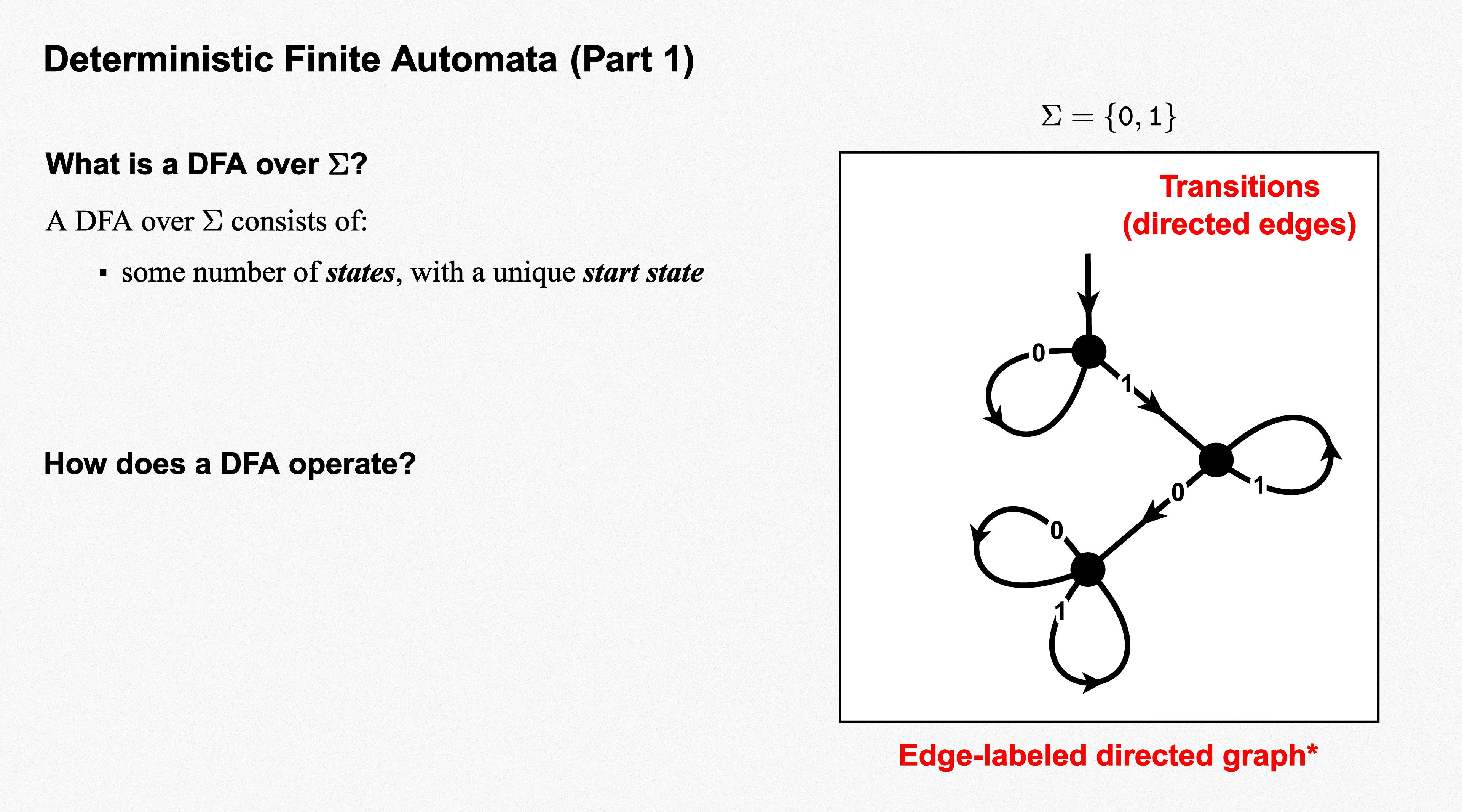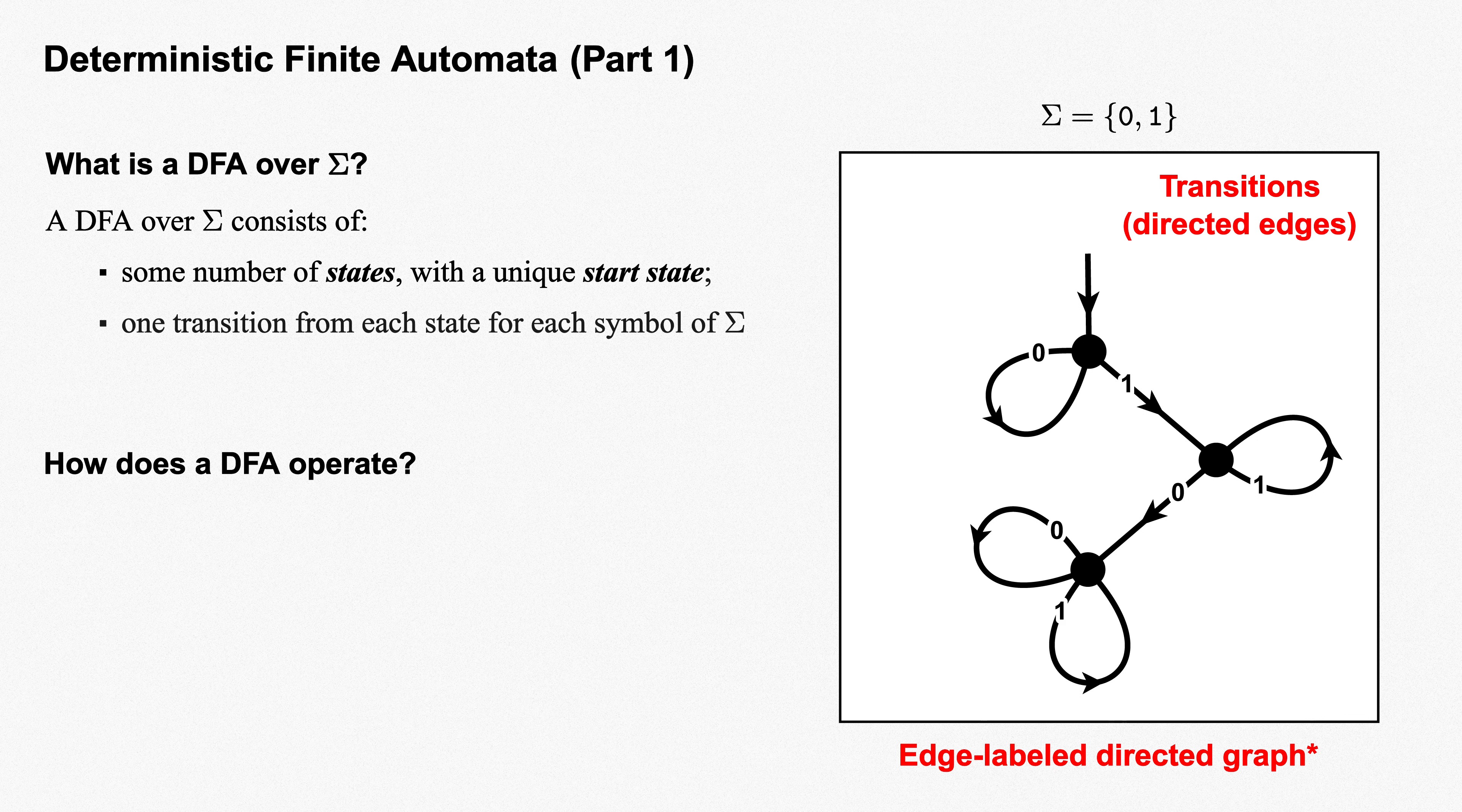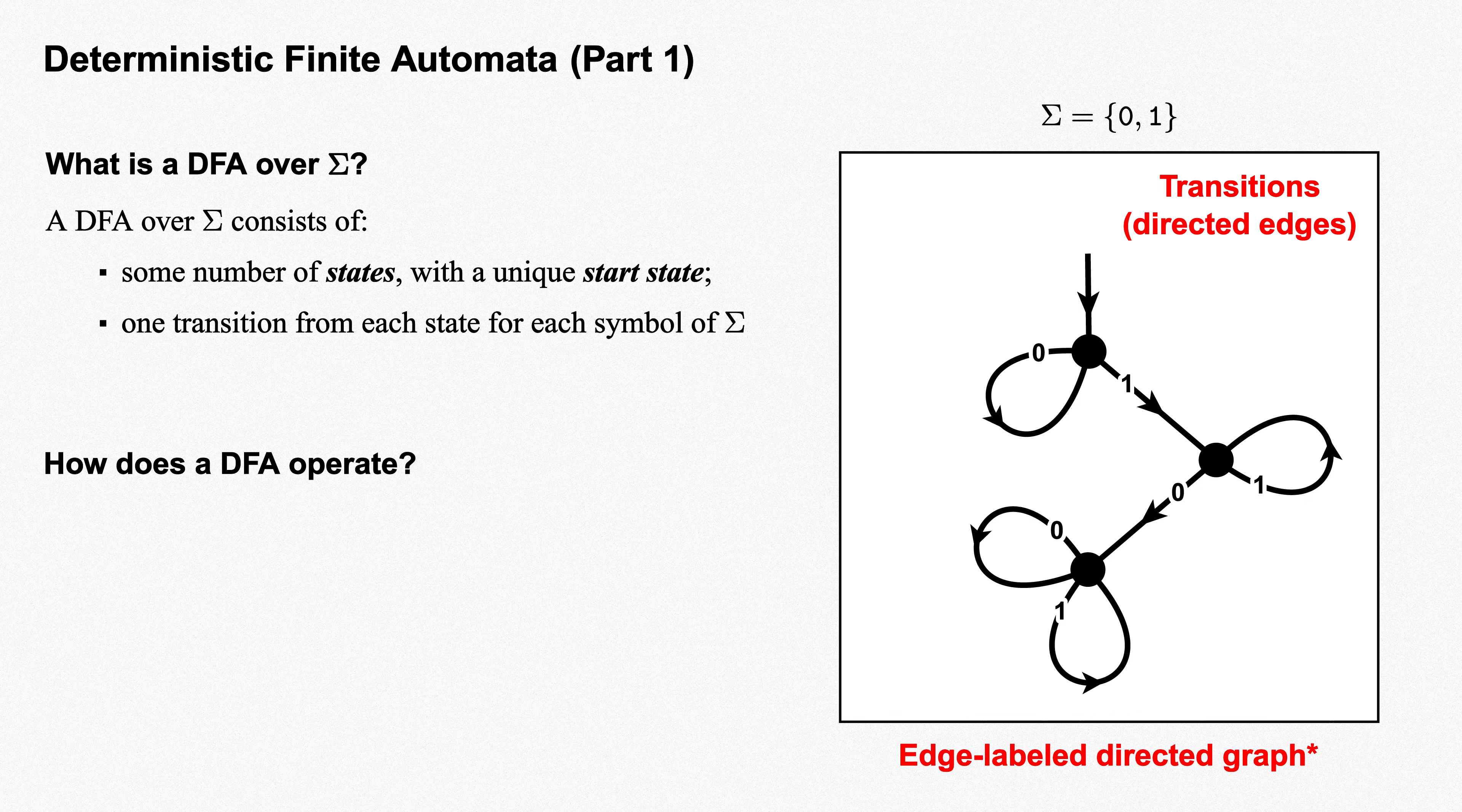Our graph also has a finite number of edges, which we think of as transitions between states of the DFA. Each one is labeled with some symbol from the alphabet sigma. Loop edges from a state back to itself are allowed. The rule for transitions is fairly straightforward. Each state must have exactly one outgoing transition for each symbol of sigma. The purpose of this rule will be clear once we discuss how a DFA operates.